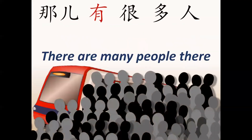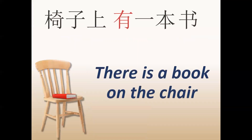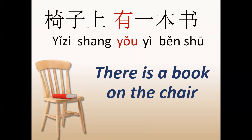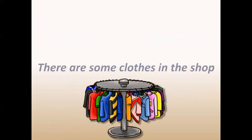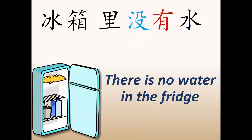Let's practice a little bit. First sentence: there are many people there — 那儿有很多人. There is a book on the chair — 椅子上有一本书. There are some clothes in the shop — 商店里有衣服.